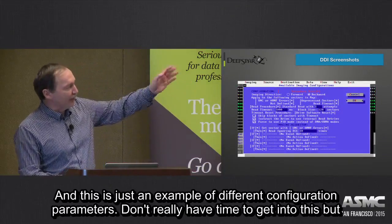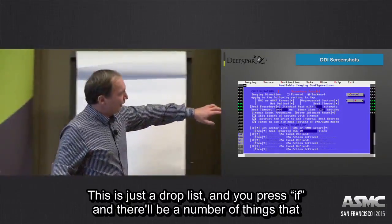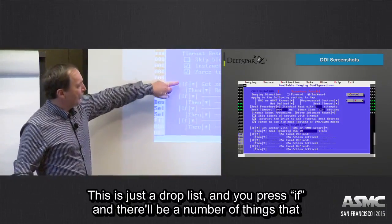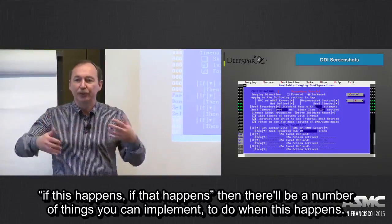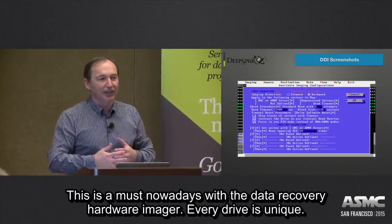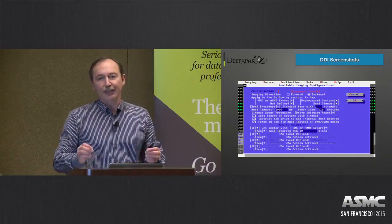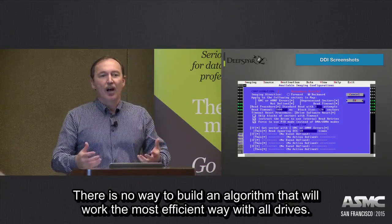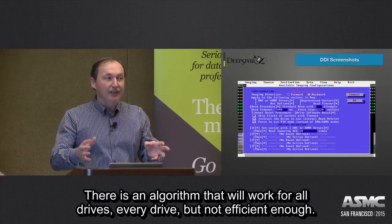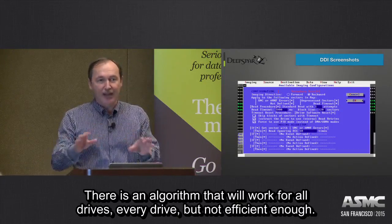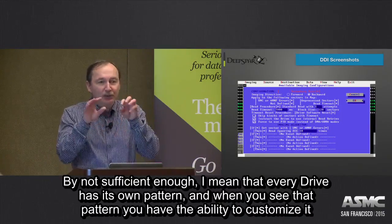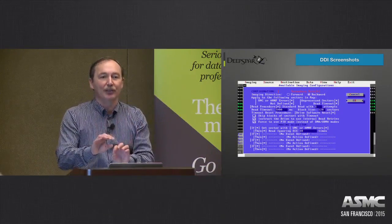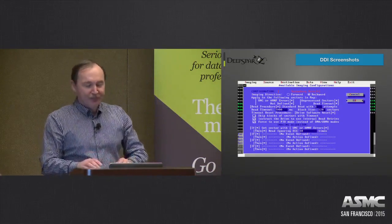This is just an example of different configuration parameters. This is a drop list — there will be a number of conditions, and for each condition there will be a number of actions you can implement defining what to do when that happens. This is a must nowadays in data recovery hardware imagers, because every drive is unique. There is no algorithm that will work the most efficiently for all drives. Every drive has its own behavior and pattern, and when you see that pattern and have the ability to customize it, you can make it most efficient for your specific drive.